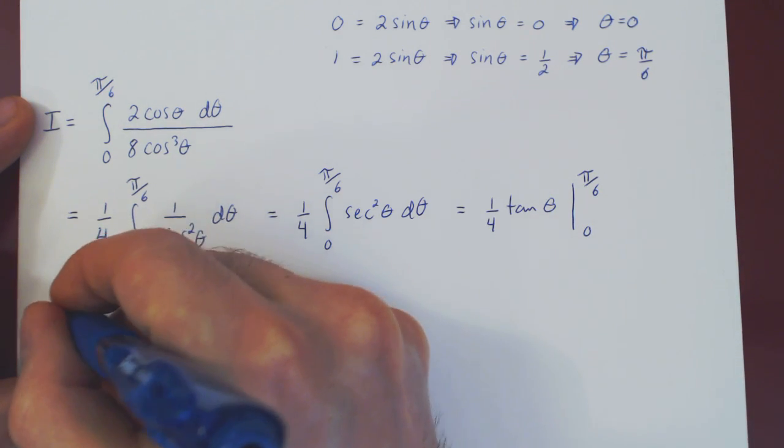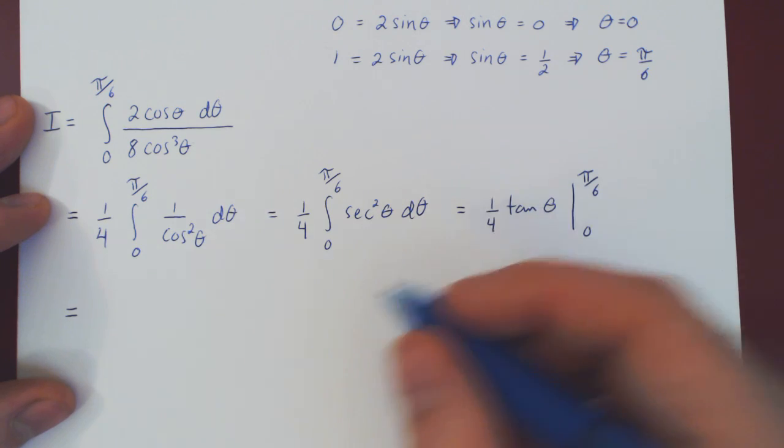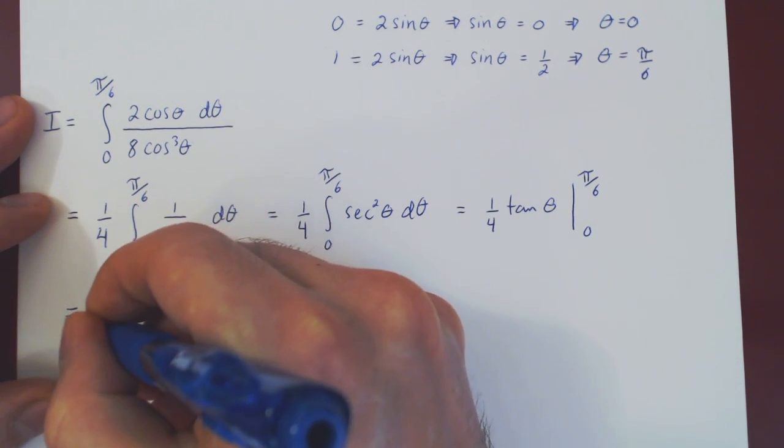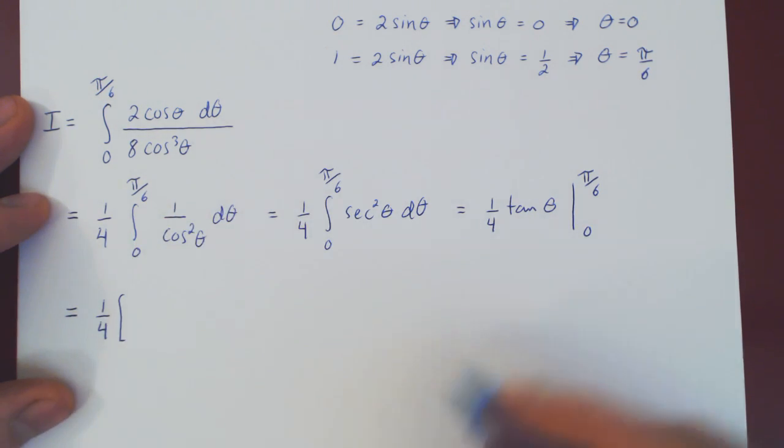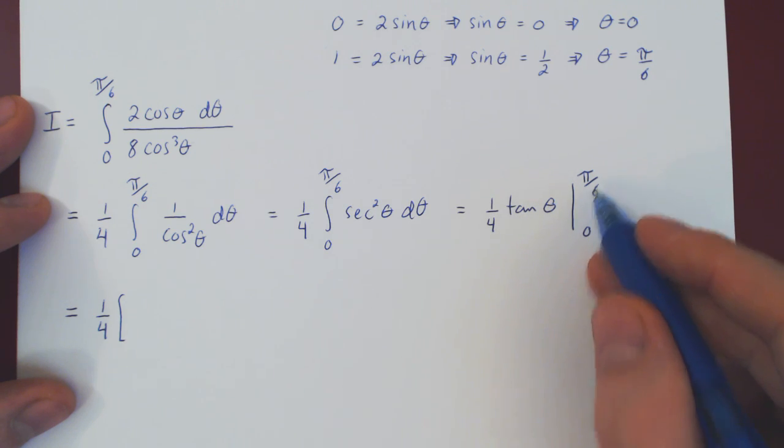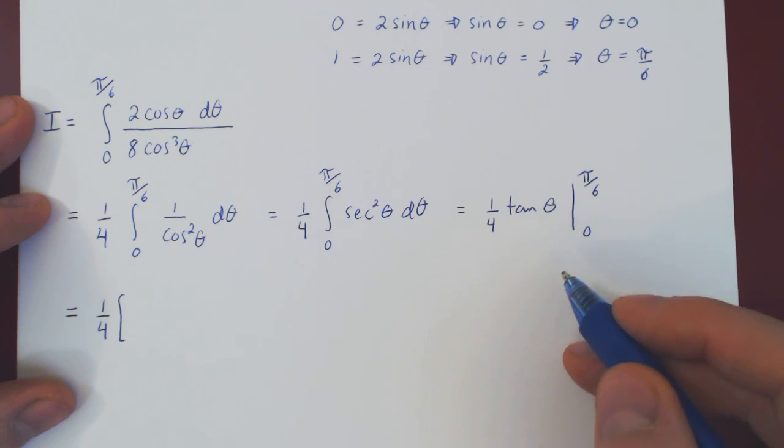And let's see what that gives us. We can leave the 1 over 4 outside, as it is a scalar multiple, and so we'll have tangent of pi over 6 minus tangent of 0.